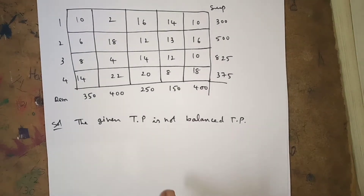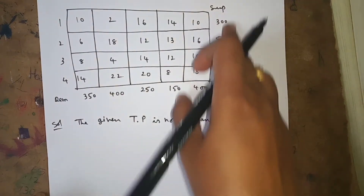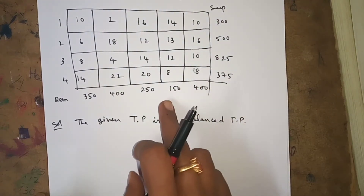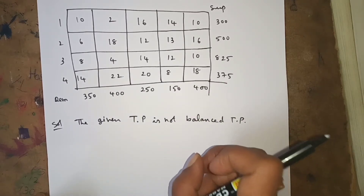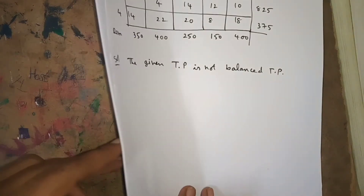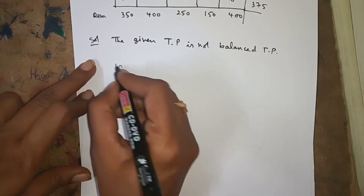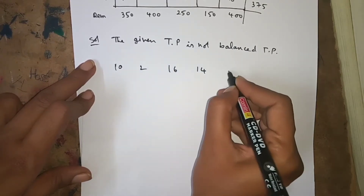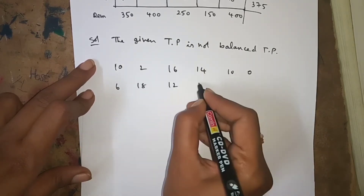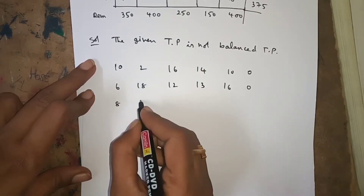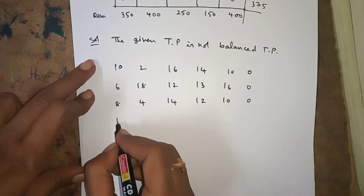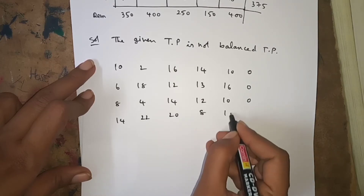Whenever you get an unbalanced TP, you have to convert it into a balanced TP by adding either a dummy row or dummy column. Demand is 1550, supply is 2000, so demand is less than supply by 450. That's why we add one dummy column with all zero cost elements and write 450 for it. The cost matrix is: 10, 2, 16, 14, 10, 0; 6, 18, 12, 13, 16, 0; 8, 4, 14, 12, 10, 0; 14, 22, 20, 8, 8, 0.